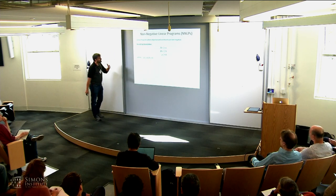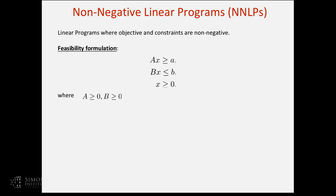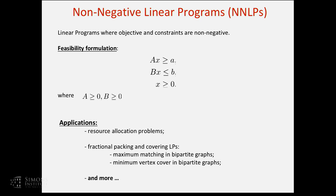We're going to look at a large class of linear programs that have the specific property that the constraint matrices A and B are non-negative — entry-wise non-negative. This is a natural class. If you look at an algorithms textbook and look at the first examples of LPs shown to students, they mostly tend to be of this kind, because using these constraints you can express things like budgets, costs, and requirements for packing and covering constraints.